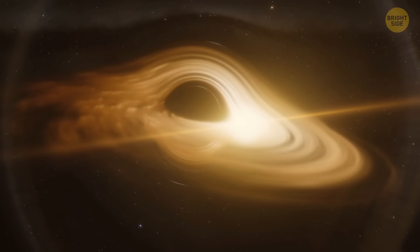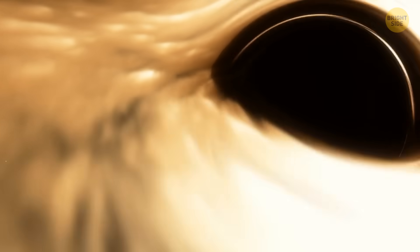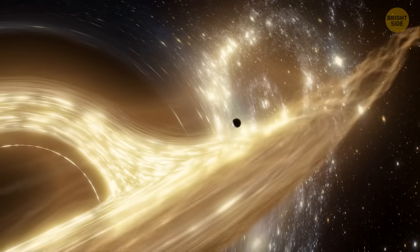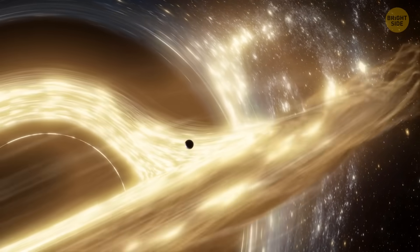First things first, a black hole is a place in space where gravity pulls so much that nothing, not even light, can get out of this region. The gravity is so strong there because a huge amount of matter is squeezed into a tiny space.